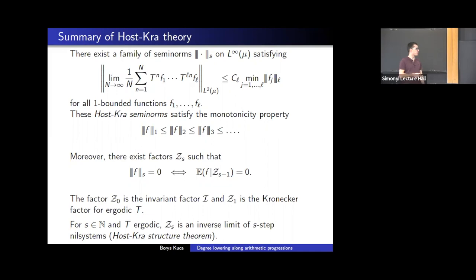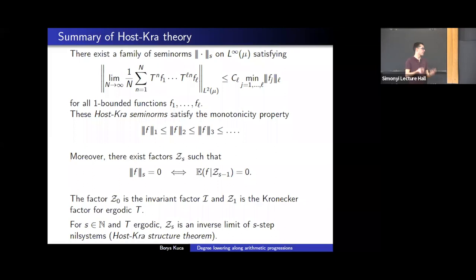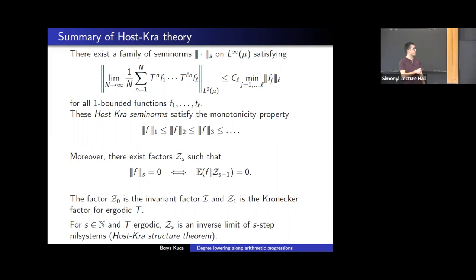These seminorms are connected with a certain family of factors: the null space of the seminorm of degree s corresponds to functions orthogonal to the Host-Kra factor of degree s minus one. These factors have nice structural properties. The factor Z₀ is the invariant factor. For ergodic transformations, Z₁ is the Kronecker factor — generated by eigenfunctions. For more general s, Zₛ is an inverse limit of s-step nilsystems, which are highly structured algebraic objects. This is the content of the deep structure theorem of Host and Kra.